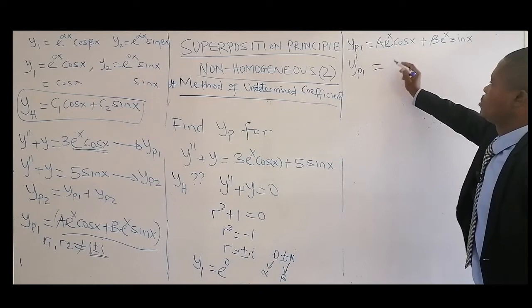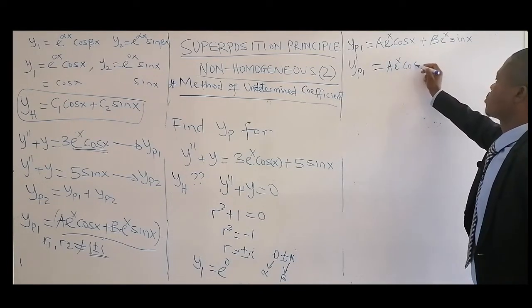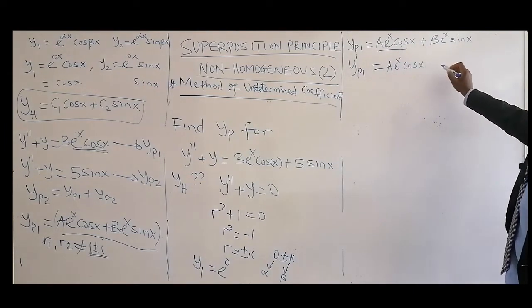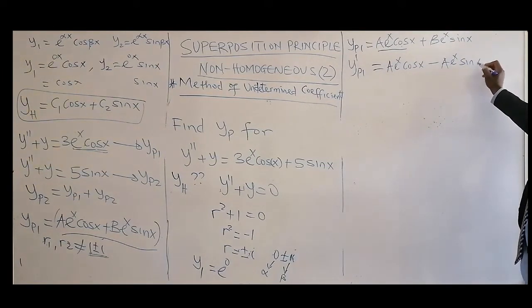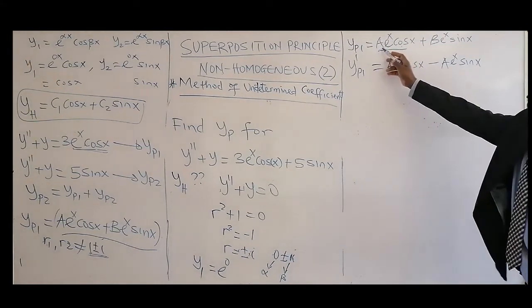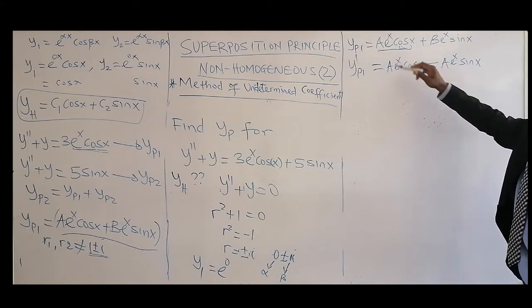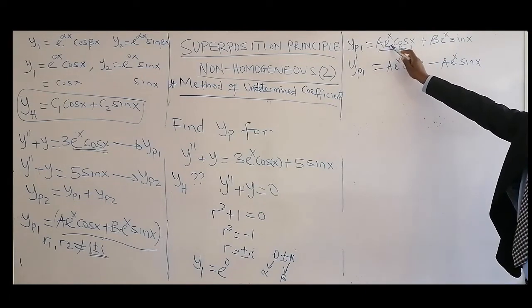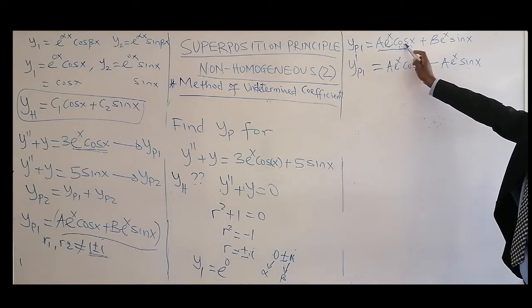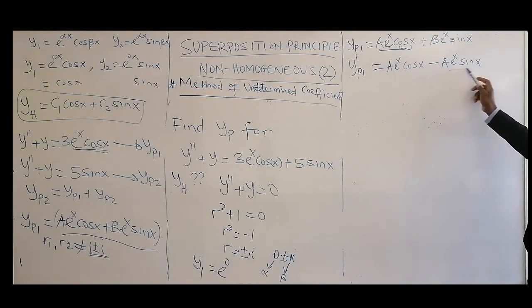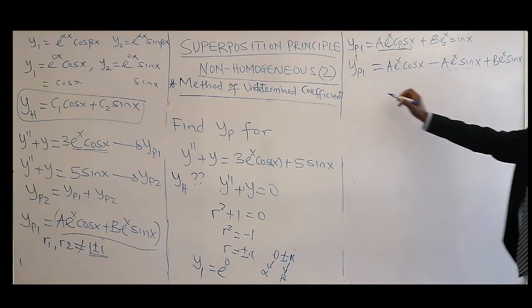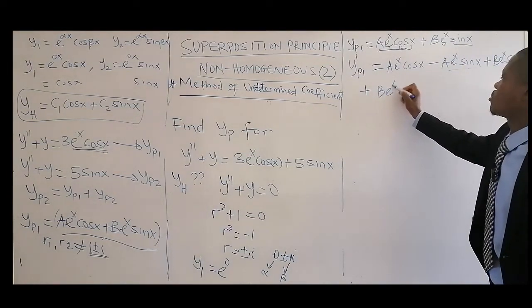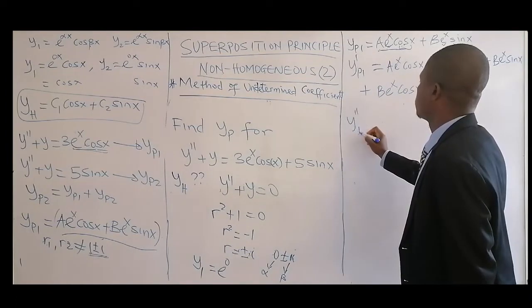Differentiating yp1: for the A·e^x·cos(x) term, keep cosine constant and differentiate e^x to get A·e^x·cos(x), then keep e^x constant and differentiate cosine to get minus A·e^x·sin(x). For the B·e^x·sin(x) term, differentiate e^x to get B·e^x·sin(x), then differentiate sine to get plus B·e^x·cos(x). That gives us the first derivative.